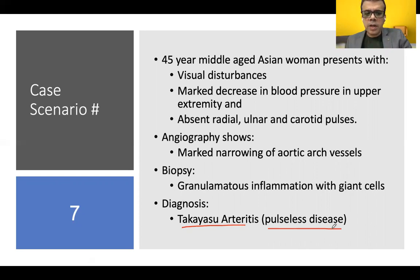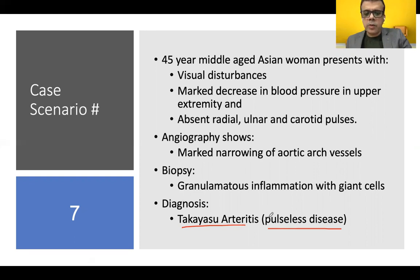In summary, Takayasu Arteritis classically presents in women less than 50 years of age and is generally more common in Asian women but has worldwide prevalence. Classical clinical symptoms include decreased blood pressure in the upper extremities, visual disturbance, systemic hypertension, claudication, aortic regurgitation, congestive cardiac failure, and myocardial infarction. Biopsy features are similar to temporal arteritis with granulomatous inflammation and giant cells, while angiogram is the diagnostic modality showing marked narrowing of aortic arch vessels. These are the important findings by which we can easily diagnose Takayasu Arteritis.